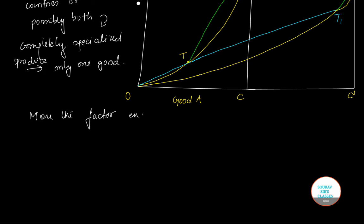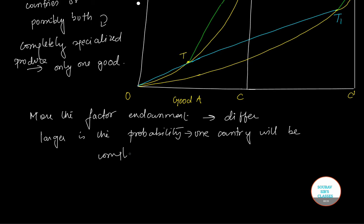If this is the case, then the model itself breaks down. The more the factor endowment in two countries will differ, the larger is the probability that one country will be completely specialized and that the complete factor price equalization may not or will not occur.